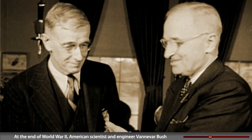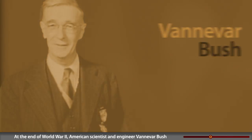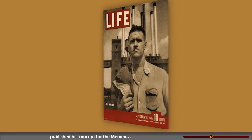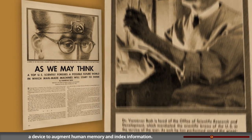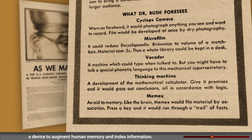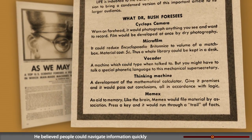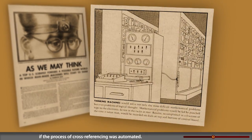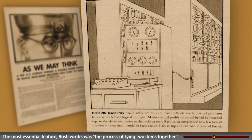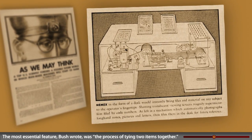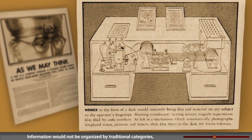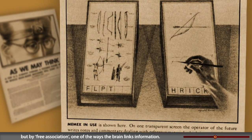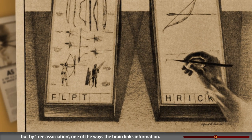At the end of World War II, American scientist and engineer Vannevar Bush published his concept for the Memex, a device to augment human memory and index information. He believed people could navigate information quickly if the process of cross-referencing was automated. The most essential feature, Bush wrote, was the process of tying two items together. Information would not be organized by traditional categories, but by free association — one of the ways the brain links information.